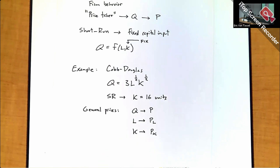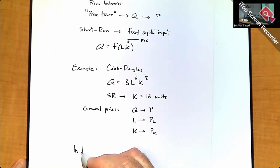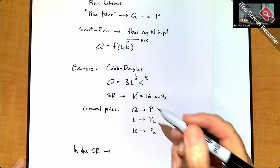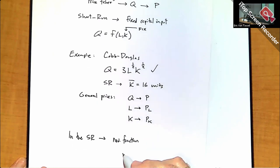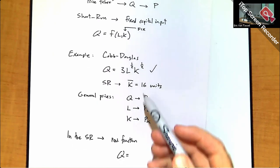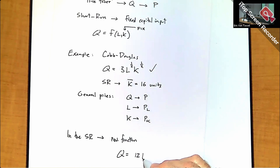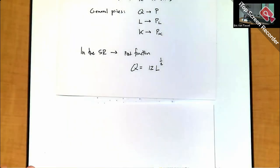In the short run, we plug in the fixed capital of 16 units to simplify the production function. Taking the square root of K=16 gives 4, and 4 times 3 is 12. So our short-run production function becomes Q equals 12 times L to the power of one-half. That's what we'll be working with. You can maximize profit a couple of different ways, as we did in the last video.